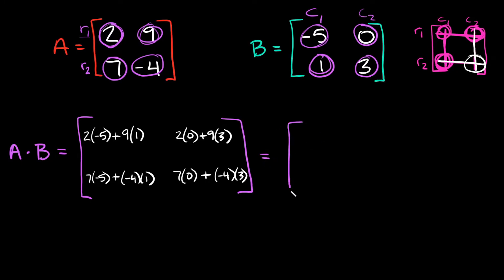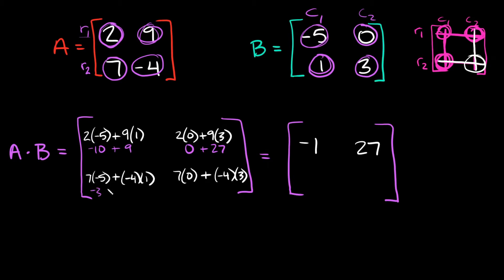So now if we simplify: two times negative five is negative ten, plus nine, so negative ten plus nine equals negative one. Two times zero is zero, plus nine times three is 27, so positive 27. Seven times negative five is negative 35, plus negative four, so negative 35 minus four equals negative 39. And lastly, seven times zero is zero, plus negative four times three is negative 12, so zero plus negative 12 equals negative 12. So A times B would be this matrix right here.